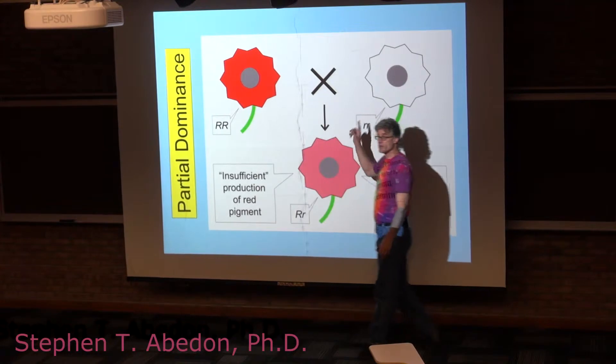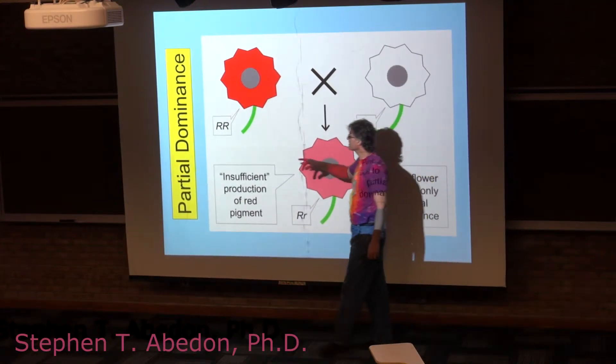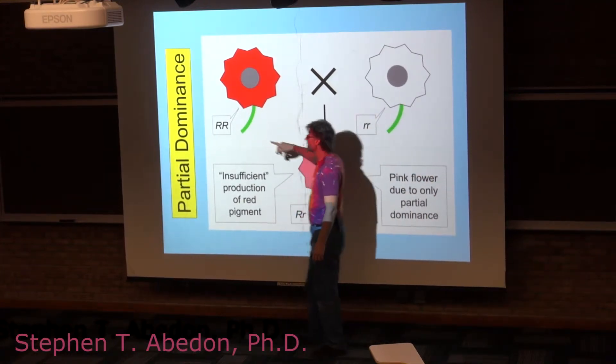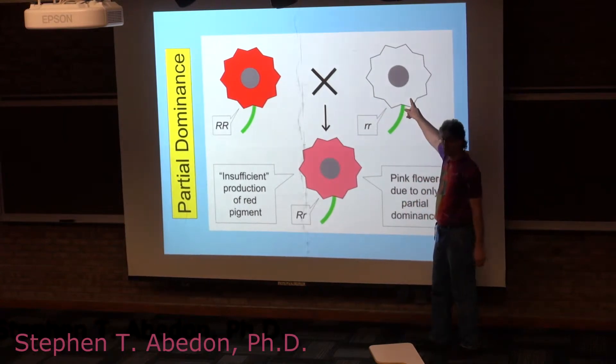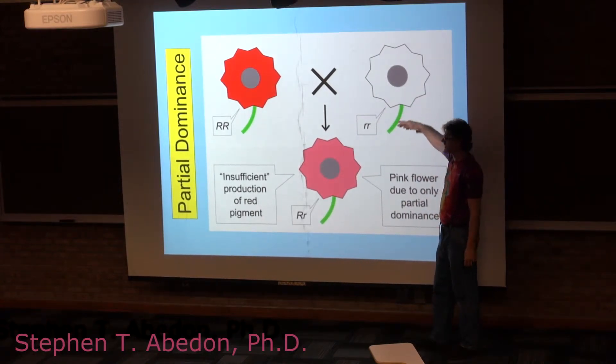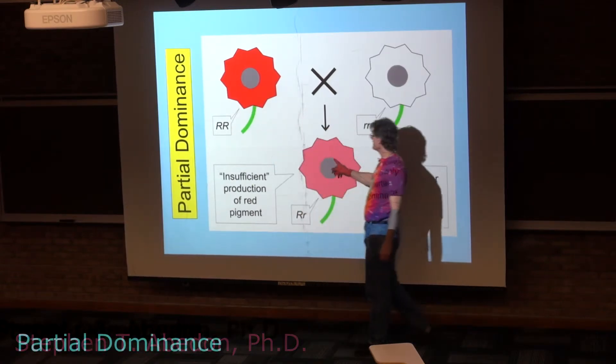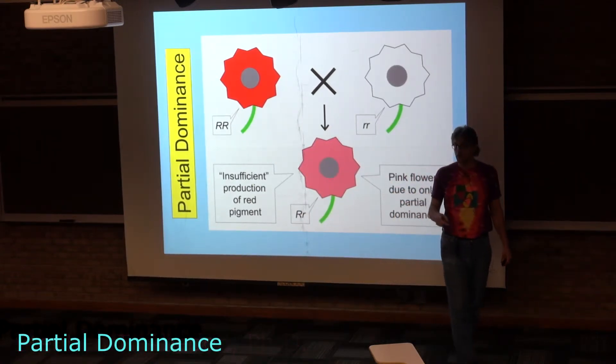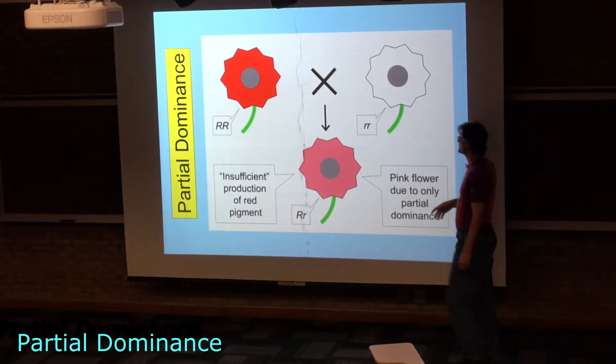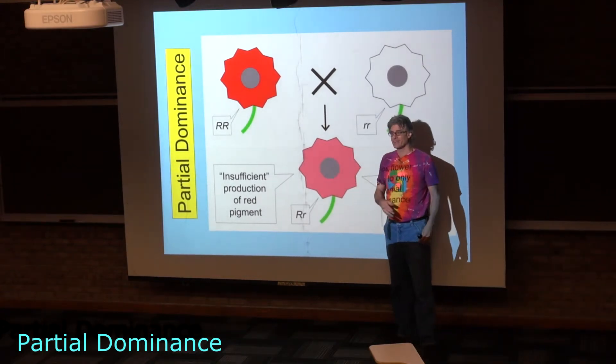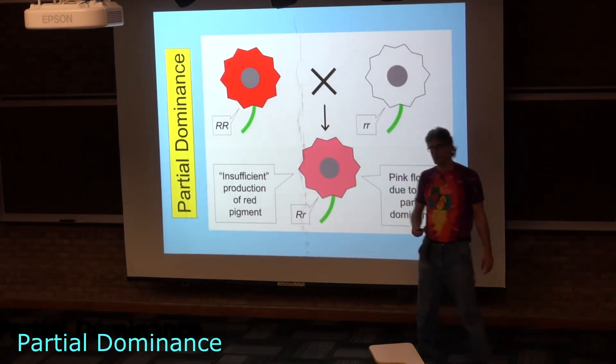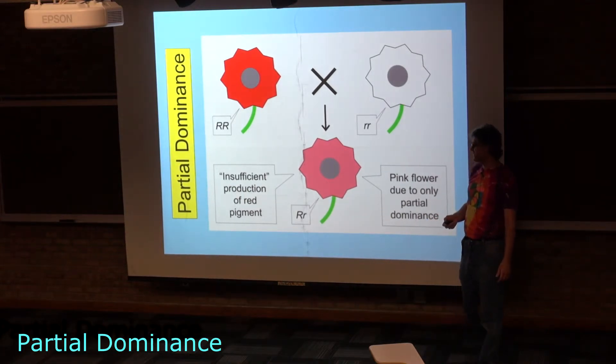from either of the two parents. In this case, the dominant allele gives you this red color, and the recessive allele gives you this white color in the homozygous state. But the red allele doesn't make enough red to completely dominate the white, and so you have partial dominance. You end up with pink rather than just red in the heterozygote.